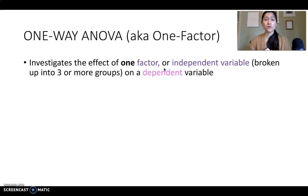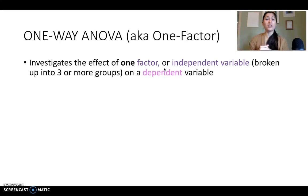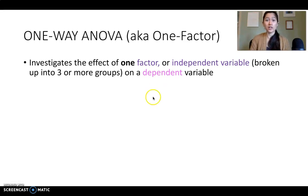So for a one-way ANOVA, you have one independent variable, that independent variable is broken into three different groups, and then you're investigating the effect of that on your one dependent variable.